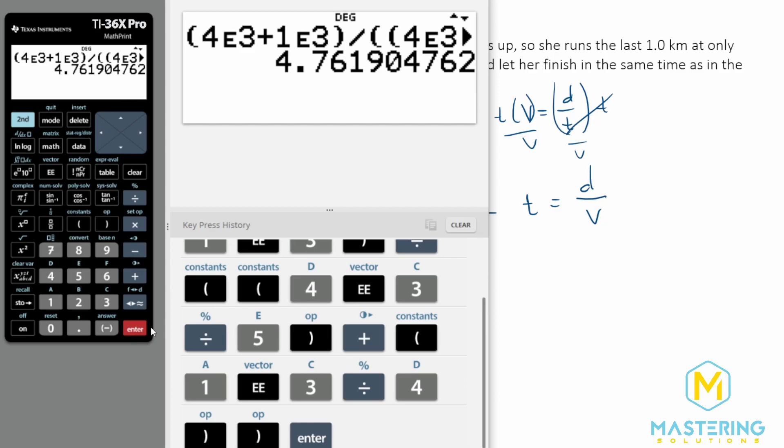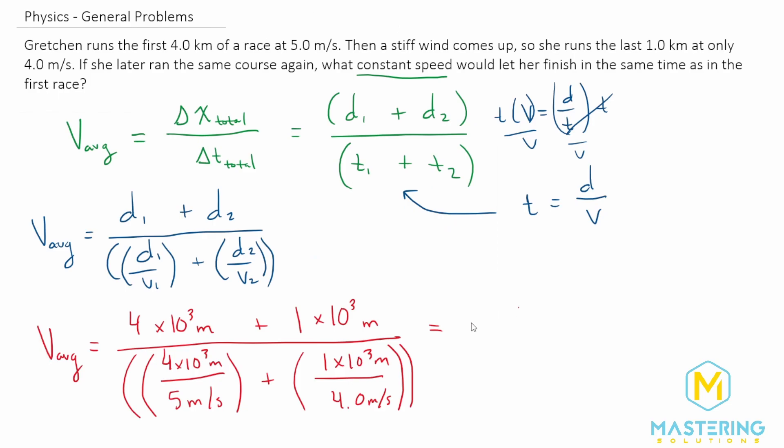So the average time that she has to run to get the same time on her race is 4.76, but we can round that to 4.8 meters per second for her average velocity to equal the time that she ran in her first race.